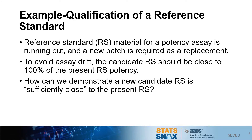We're going to start with an example today, which is qualification of a reference standard. In the analytical lab, we use reference standards for a variety of assays, and in this particular example, we're using it for a potency assay. This material is starting to run out, so we need to develop a new batch of material and replace the reference standard with this new material. One of the problems with a potency assay is that all measurements are relative to the reference standard, so we need the new reference standard to be very close to the previous one — specifically, the candidate reference standard should have a value of 100% relative to the present reference standard.